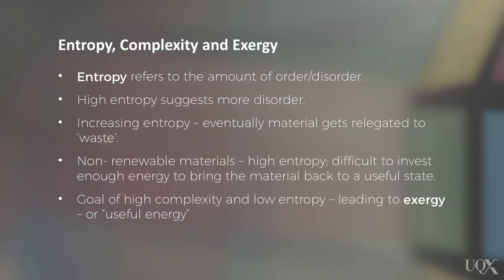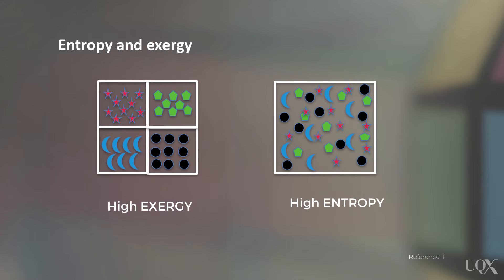The amount of useful energy that can be harnessed in such processes is referred to as exergy. More ordered, diverse, and dense systems allow for more exergy to be harnessed, as is schematically shown in this diagram.